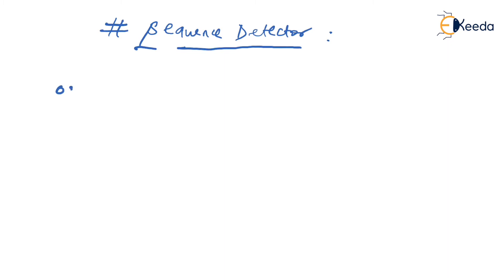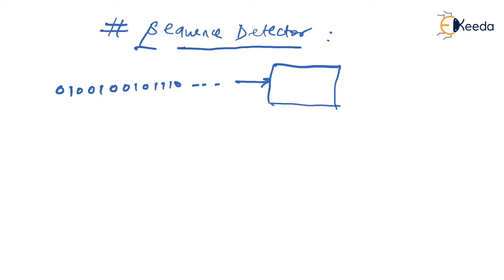A sequence detector works by applying a binary input stream — for example, 0 1 0 0 1 0 0 0 1 0 1 1 1 0 — to the machine. It has two inputs: a clock input and input X where the binary stream is applied, and an output Y. Output Y goes high only when a particular binary sequence is detected by the machine, and after that it automatically becomes 0.